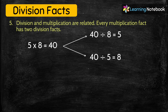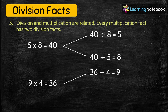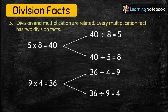Similarly, consider the multiplication fact 9 × 4 = 36. It also has two division facts: 36 ÷ 4 = 9, and 36 ÷ 9 = 4. So students, these are the five division facts.